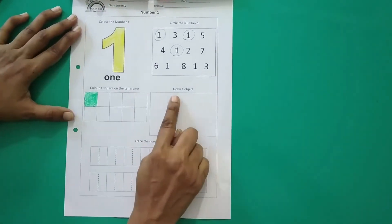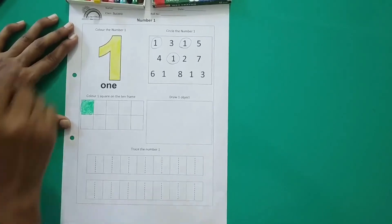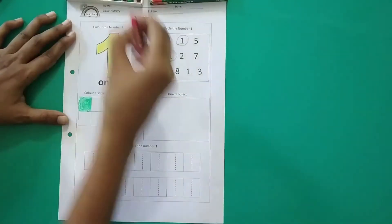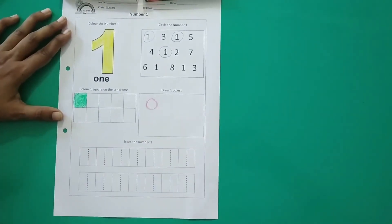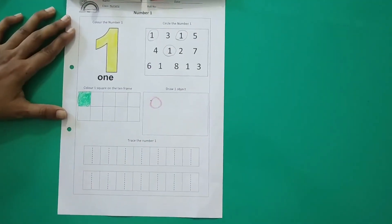Now draw one object. Ek hi object draw karna hai, only one object. So I can draw one circle. Simple. Draw one object. I will stop over here.